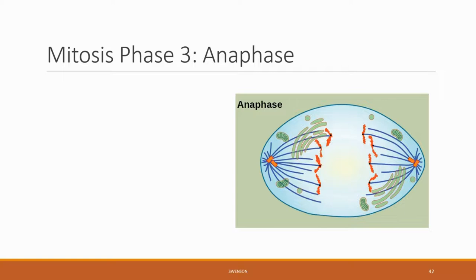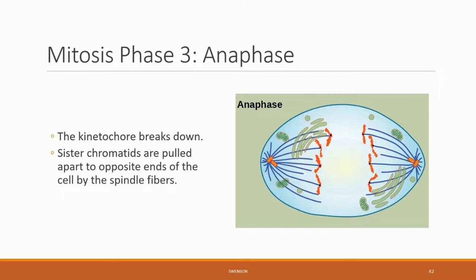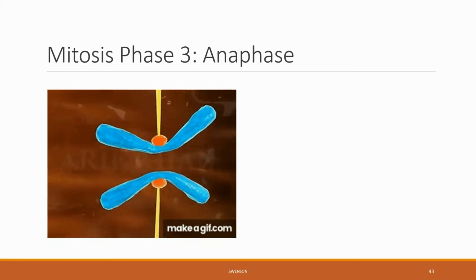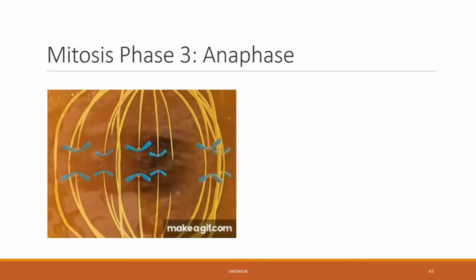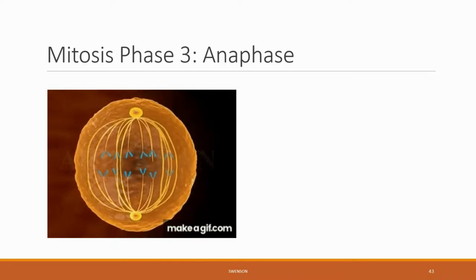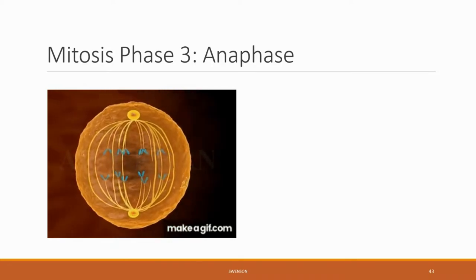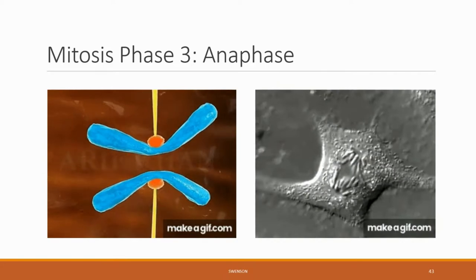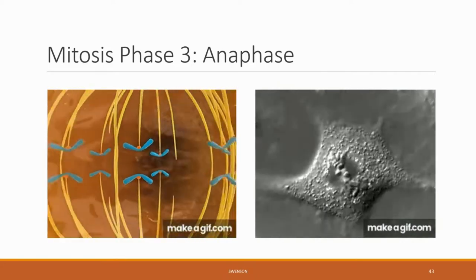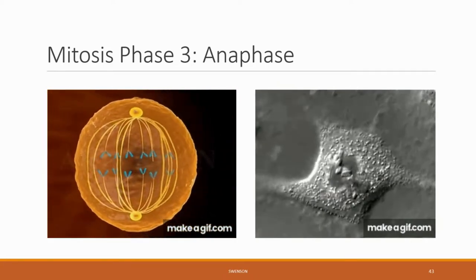Mitosis phase three: in anaphase, the kinetochore finally breaks down and the sister chromatids are pulled apart to opposite ends by the spindle fibers, so that now each side has a complete set of homologous chromosomes. Here this animation shows the separating of the kinetochore and the spindle fibers pulling them into different ends of the cell. Here's a microscopy image of them being ripped apart.